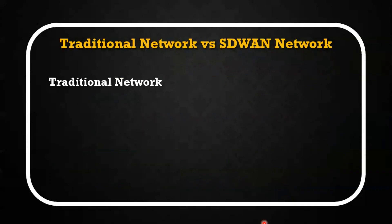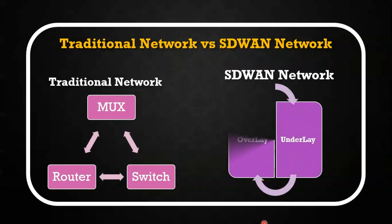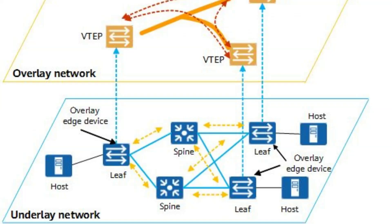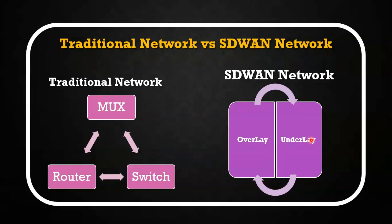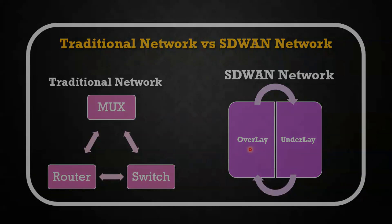SD-WAN and traditional networking represent different approaches to designing and managing networks. Traditional networking relies on hardware and physical infrastructure such as routers, switches, and other networking devices. In SD-WAN networks we have two types: underlay and overlay. The underlay is the physical network and the overlay is the logical network. The underlay refers to physical infrastructure such as routers and switches, using connections like broadband internet, LTE (4G/5G), and other WAN links with protocols like OSPF and BGP. The overlay is designed to enhance performance, security, and flexibility, running protocols like VXLAN, GRE, and OMP — OMP being the Overlay Management Protocol used in Cisco SD-WAN (Viptela).